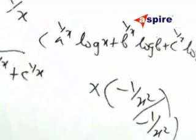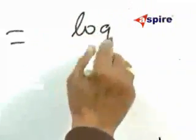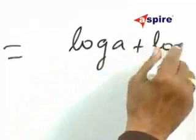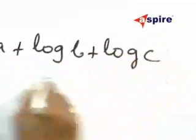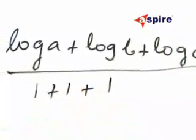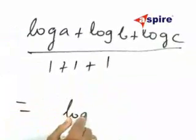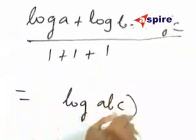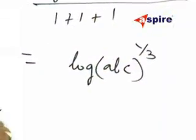Now, as X tends to infinity, log of K will be log A plus log B plus log C, the whole thing divided by 1 plus 1 plus 1. And this will be equal to log ABC to the power 1 by 3.